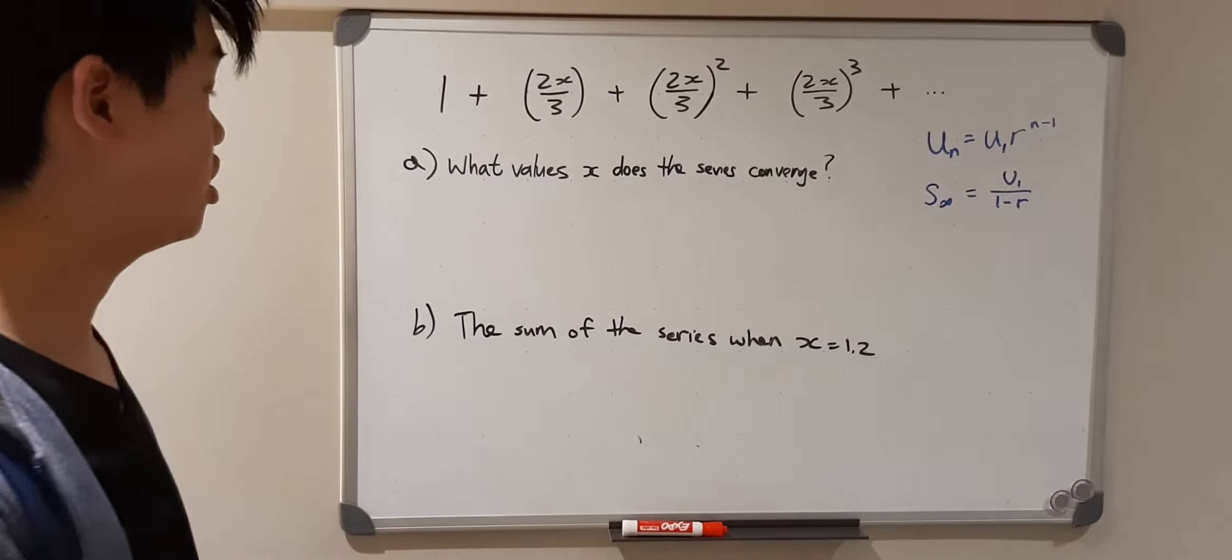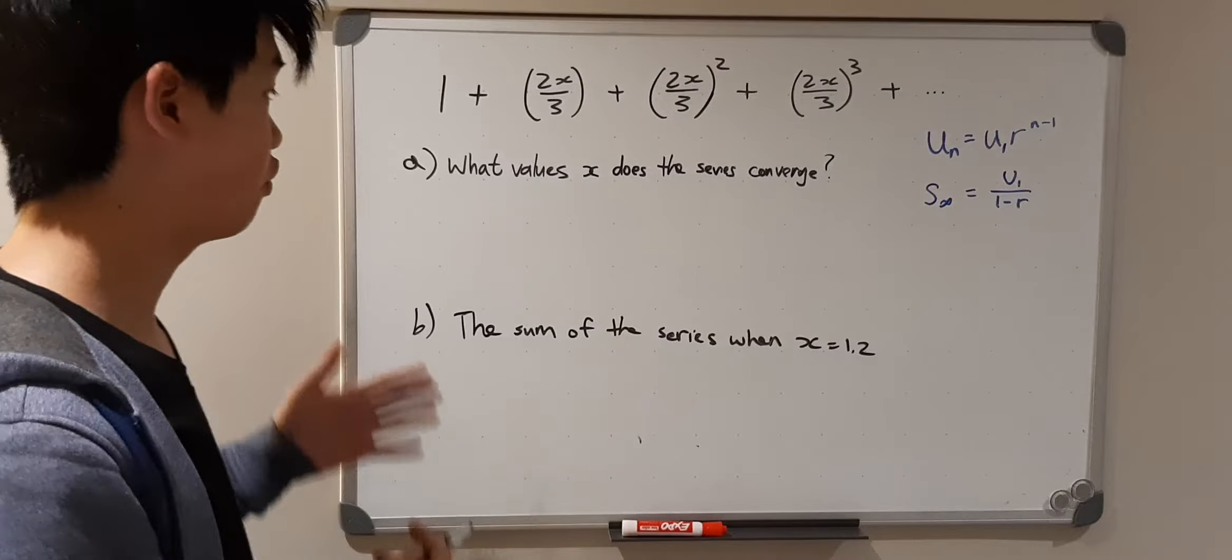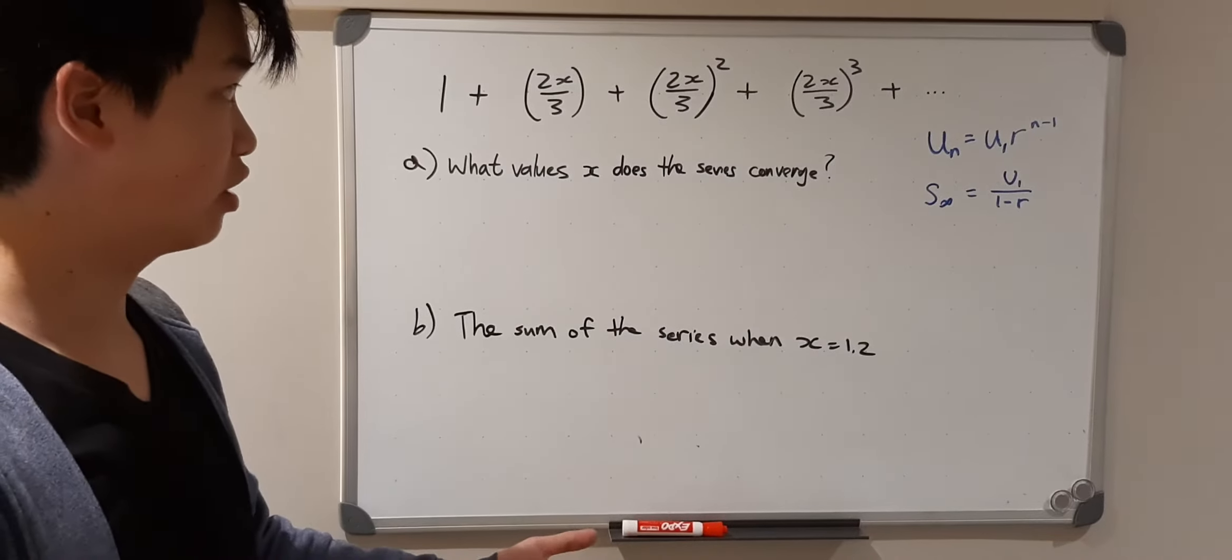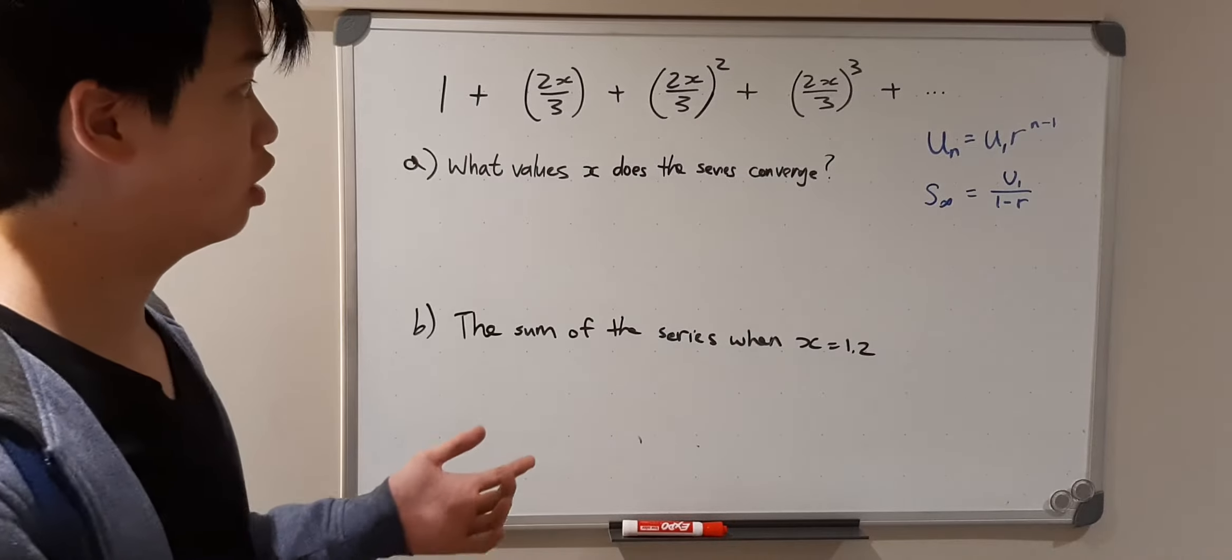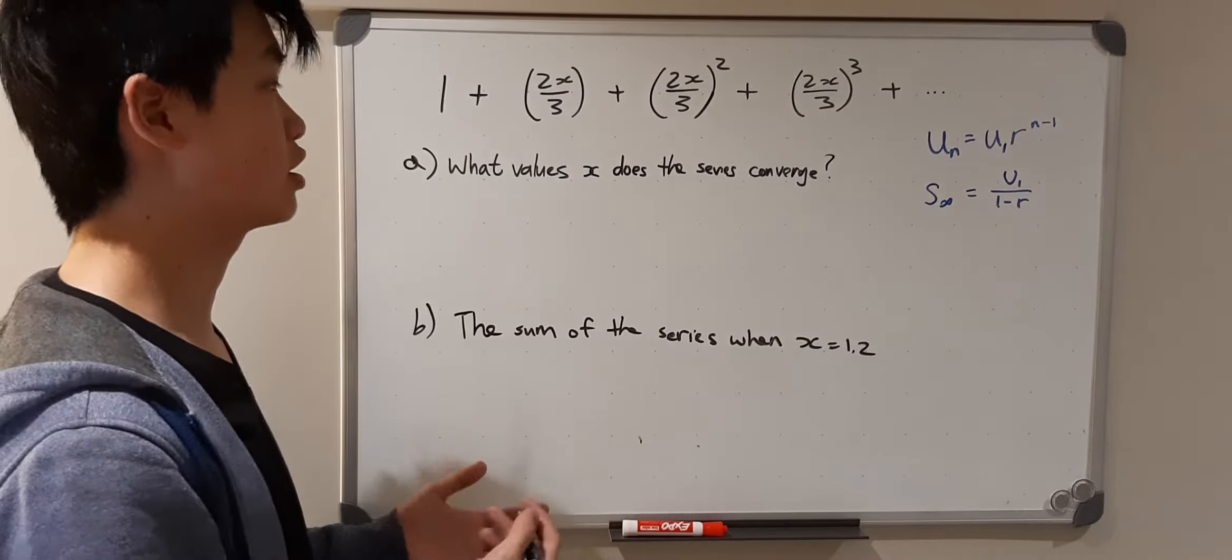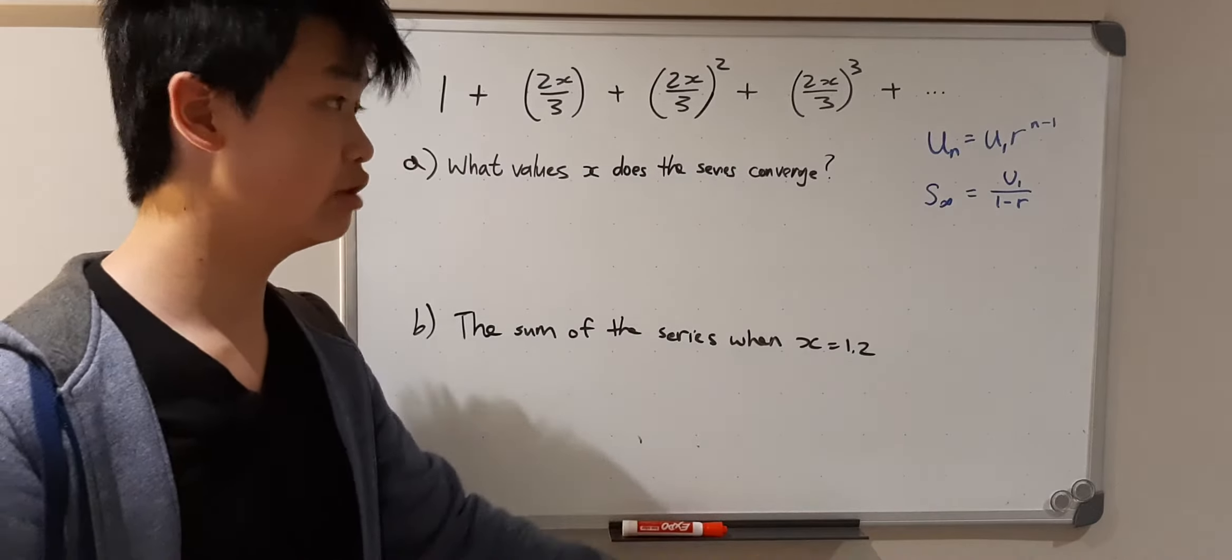Hello, so here we have a geometric sequence. The first term is 1, the second term is 2x over 3, the third term is 2x over 3 squared, and the fourth term is 2x over 3 cubed, and this continues infinitely.